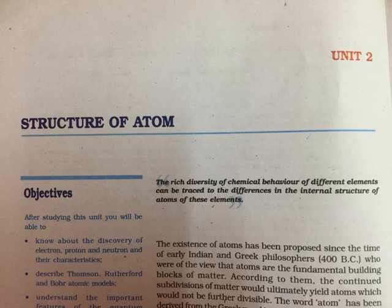On the basis of above observations and conclusions, Rutherford proposed the nuclear model of atom. According to this model: (1) The positive charge and most of the mass of the atom is densely concentrated in an extremely small region called the nucleus. (2) The nucleus is surrounded by electrons that move around the nucleus with very high speed in circular paths called orbits. Thus, Rutherford's model of atom resembles the solar system in which the nucleus plays the role of the sun and the electrons are the revolving planets. Electrons and the nucleus are held together by electrostatic forces of attraction.